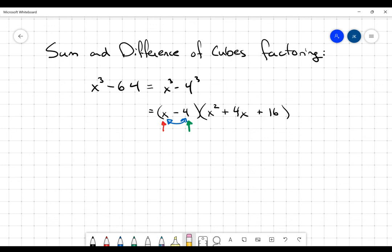And there we go. That is the factoring that we're looking for. This x minus 4 multiplied by x squared plus 4x plus 16. Now, I just want to demonstrate to you that that is, in fact, equal to x cubed minus 64.